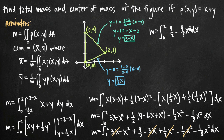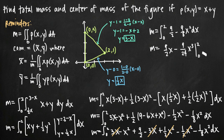All y variables have been eliminated. Integrating with respect to x: we get nine-halves x minus nine over 24 x³, evaluated from 0 to 2. Plugging in x equals 2: nine-halves times 2 equals 9, and nine over 24 times 8 simplifies to 3, giving 9 minus 3. Plugging in x equals 0 gives 0. So mass equals 6.